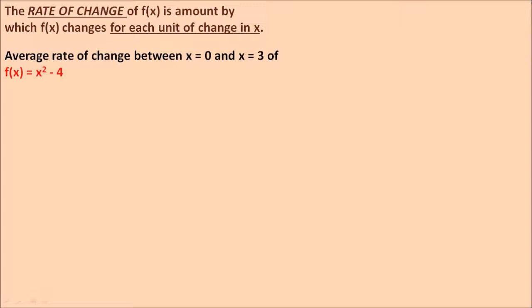Let's look at this particular example. Find the average rate of change between x = 0 and x = 3 of the function f(x) = x² - 4. Now how do we do that? To find the rate of change, you see how much the function has changed, and then you divide that by how much x has changed.